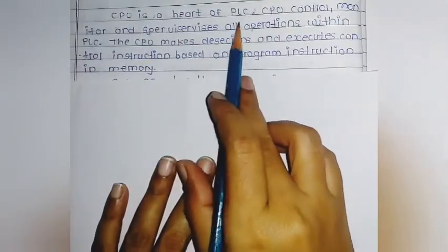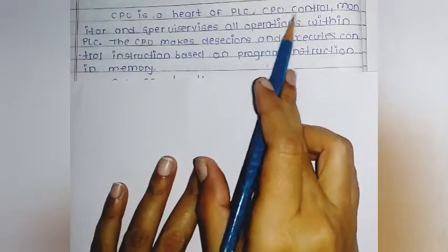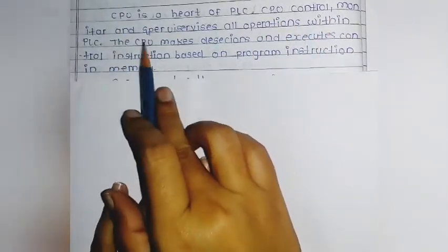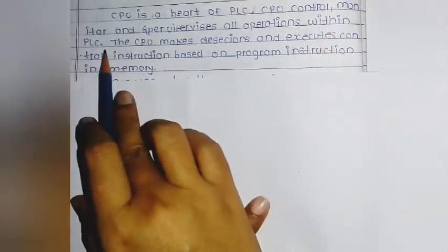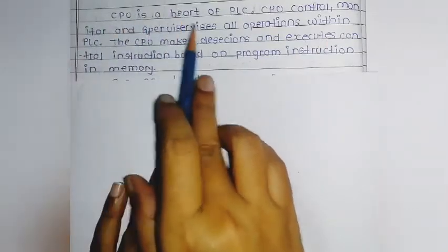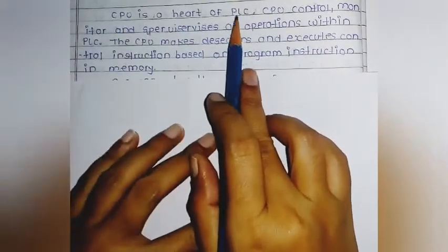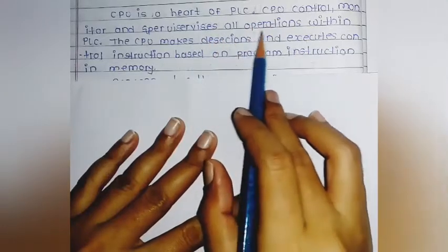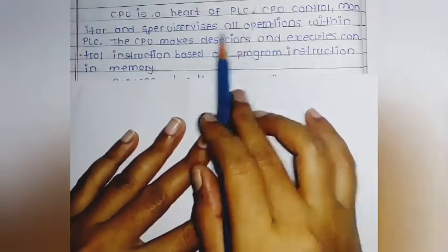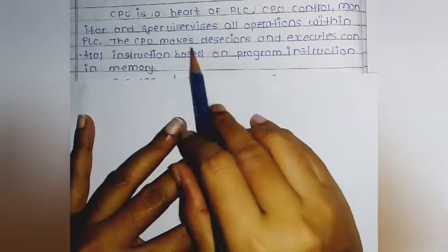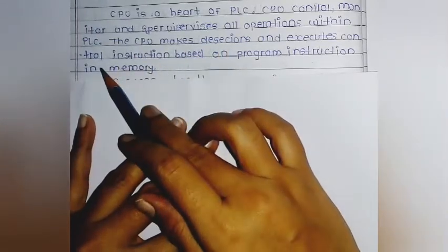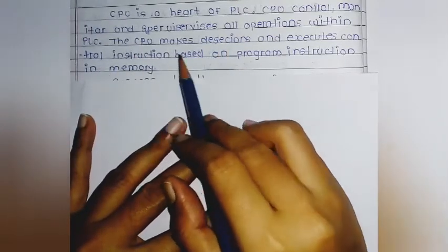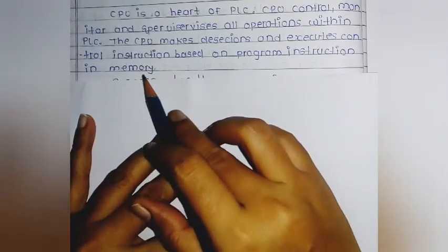The CPU is the heart of the PLC. The CPU controls, monitors, and supervises all the operations within the PLC. The CPU makes decisions and executes control instructions based on the program instructions stored in the memory.